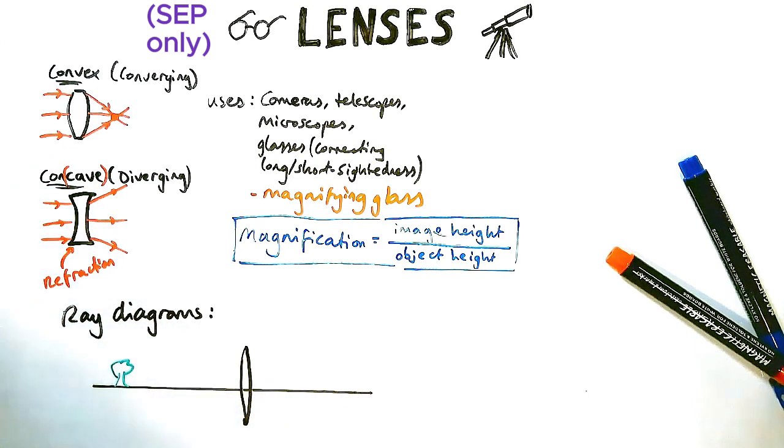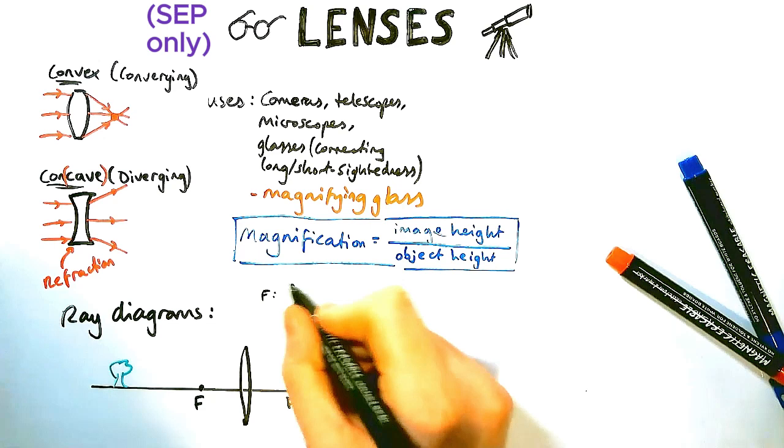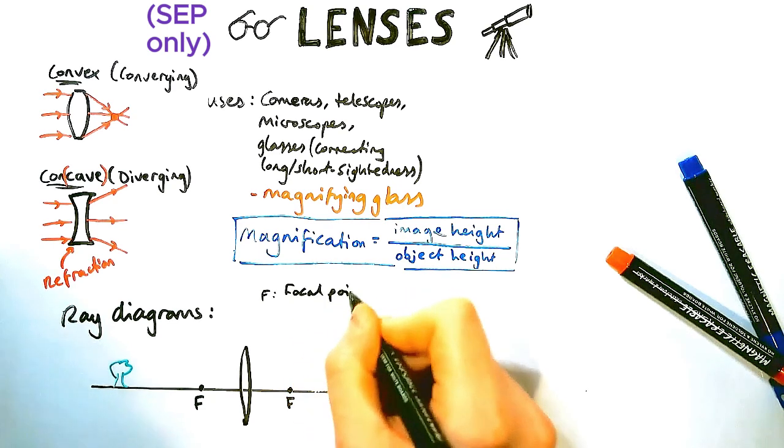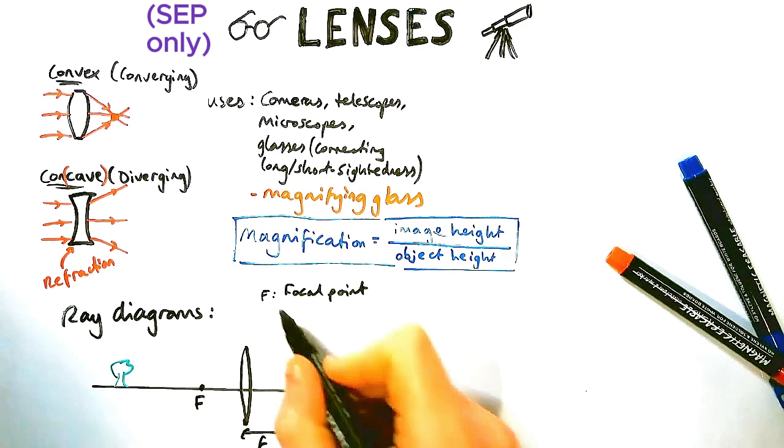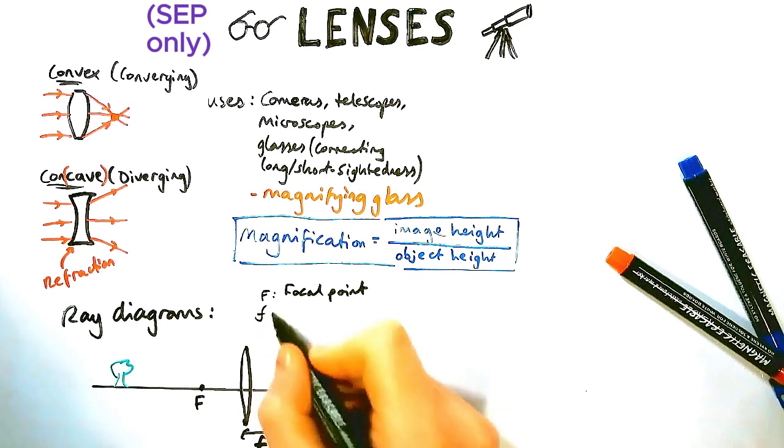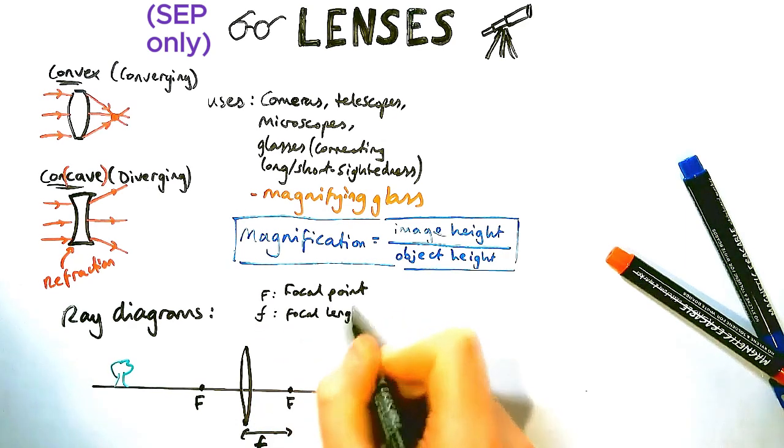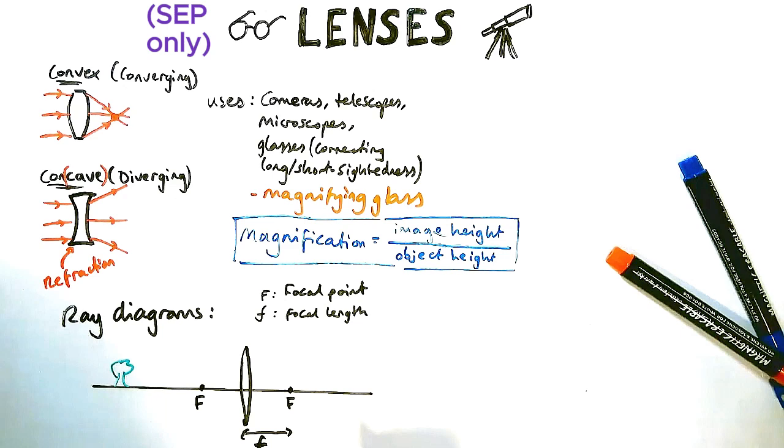Now they'll also be labelled on the diagram a capital F which stands for the focal point or the focus. Now as you see from the diagram above with a convex lens that's where the light focuses at. A small case f might be drawn for you or you might need to label which is called the focal length.